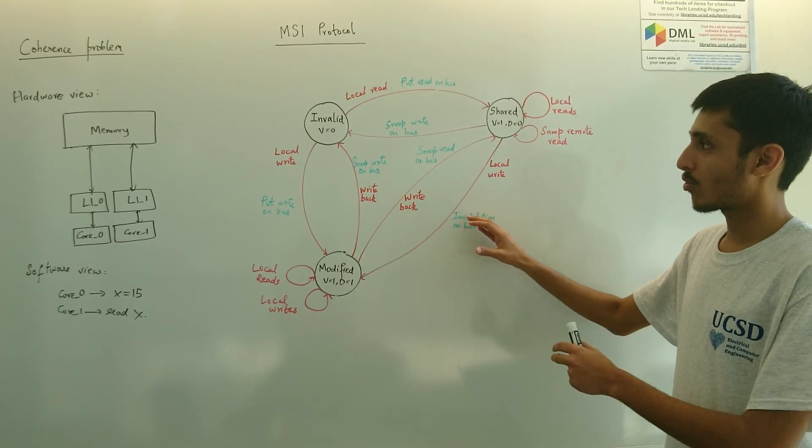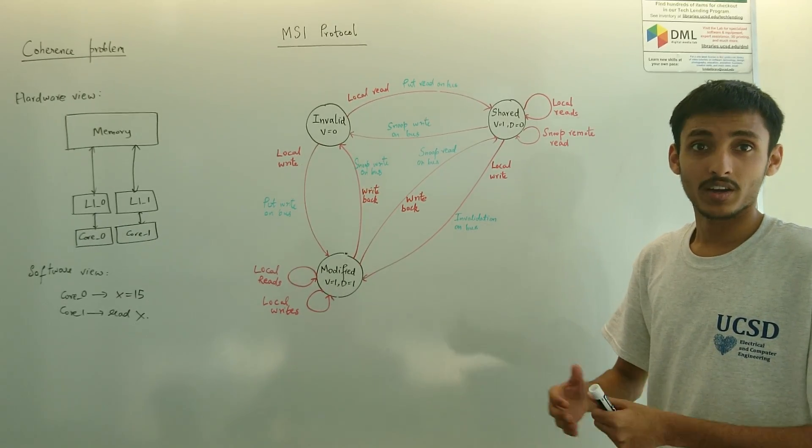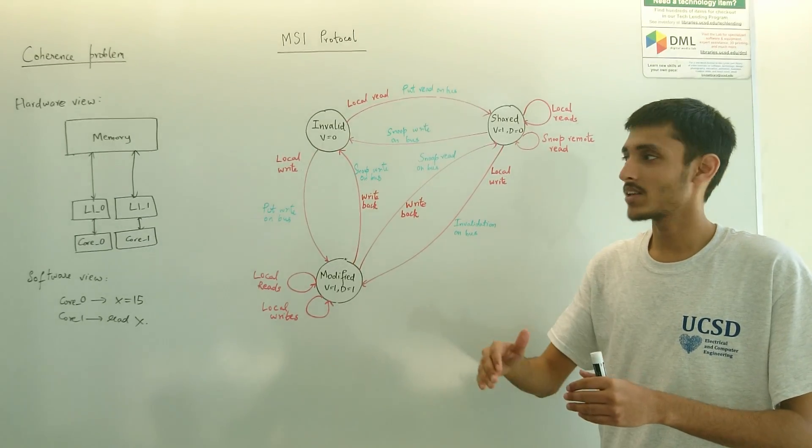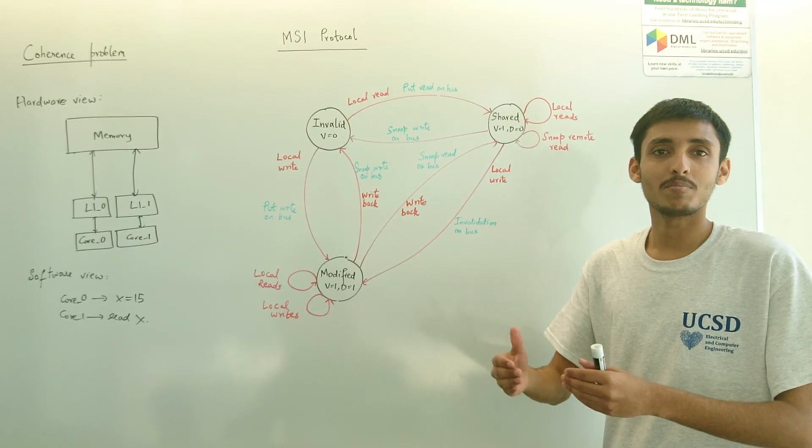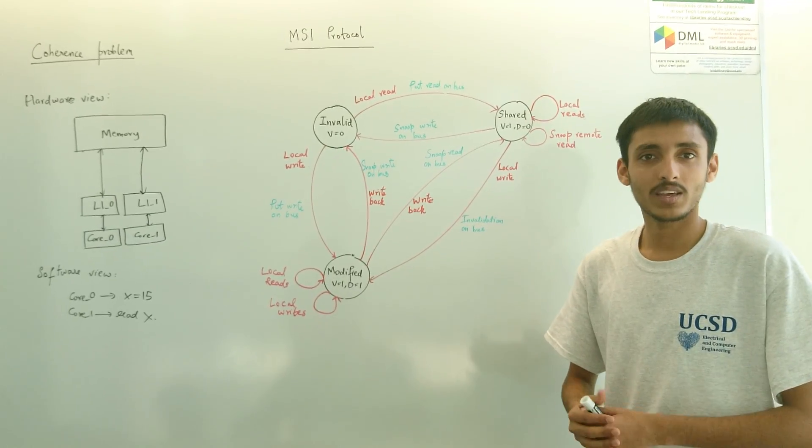Using such a simple protocol of just three different states for every cache line across different caches, we can ensure that a coherent value is maintained across all the local caches and every processor is able to get the most updated value in a shared memory system. This is why we use MSI protocol to solve the cache coherence problem.